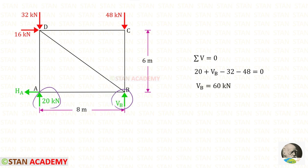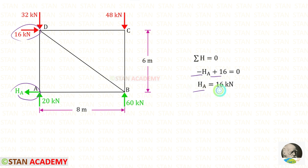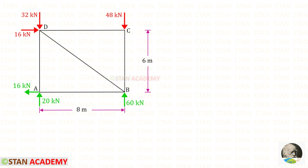Let us apply the equilibrium rule and find Vb. Va and Vb are acting upwards so both are positive; the two applied loads are acting downwards so both are negative. For Vb we will get 60 kN. Let us apply the horizontal equilibrium rule and find Ha. The horizontal load is acting towards the right side so it will be positive; Ha is acting towards the left side so it will be negative. For Ha we will get 16 kN.